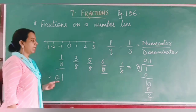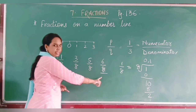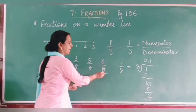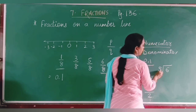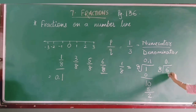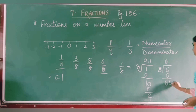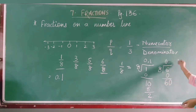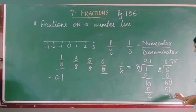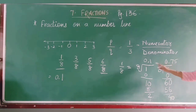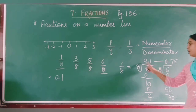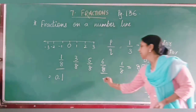Now let us check the last number as well. For 6 divided by 8: 6 is smaller than 8 so we write 0, put decimal, bring down 0. 8 sevens are 56, remainder 4; 8 times 5 gives us 40. So our answer is 0.75. Our first number 1/8 starts near 0 and the last number 6/8 is 0.75, so the number line lies between 0 and 1.